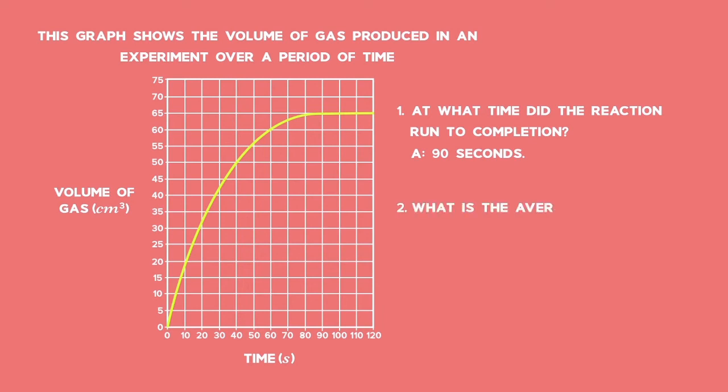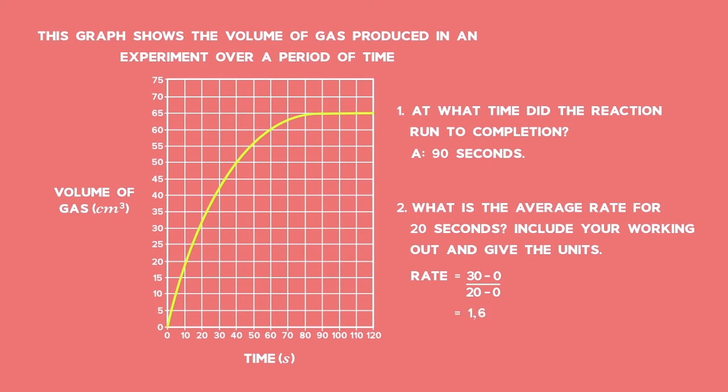What is the average rate for the first 20 seconds? Include your working out and give the units. Here we calculate the gradient for the first 20 seconds. So, 30 minus 0 all divided by 20 minus 0 seconds equals 1.67 cm³ per second.